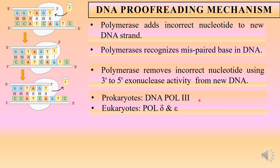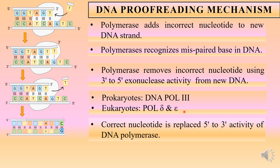DNA polymerase III is the most efficient in prokaryotes. In eukaryotes, it is the polymerases that elongate the chain — delta and epsilon — that are involved with 3' to 5' exonuclease activity. So both prokaryotes and eukaryotes have different polymerases that have the 3' to 5' exonuclease activity. Once the incorrect base is removed, the correct nucleotide is replaced by the 5' to 3' activity of DNA polymerase.